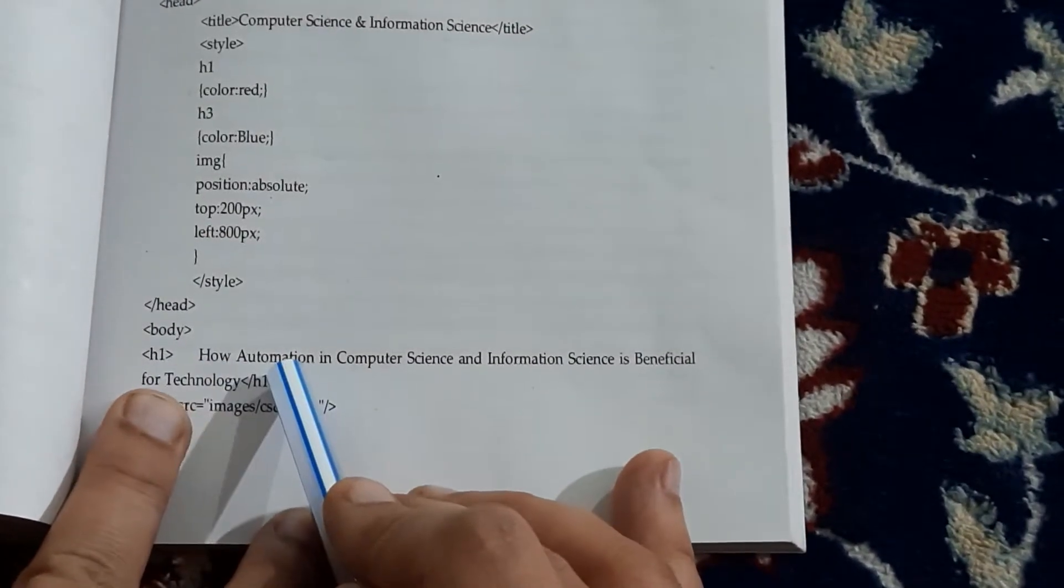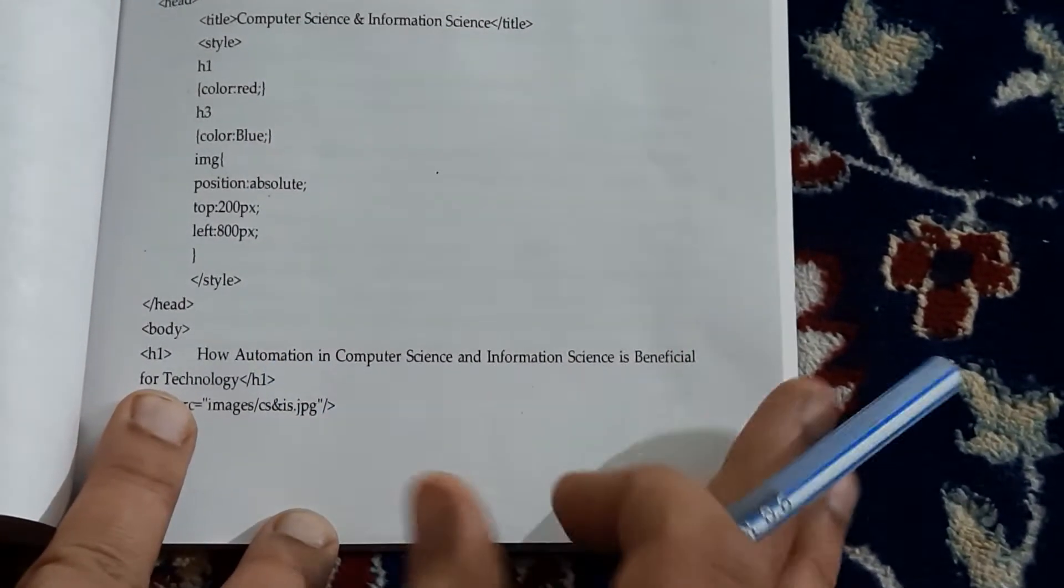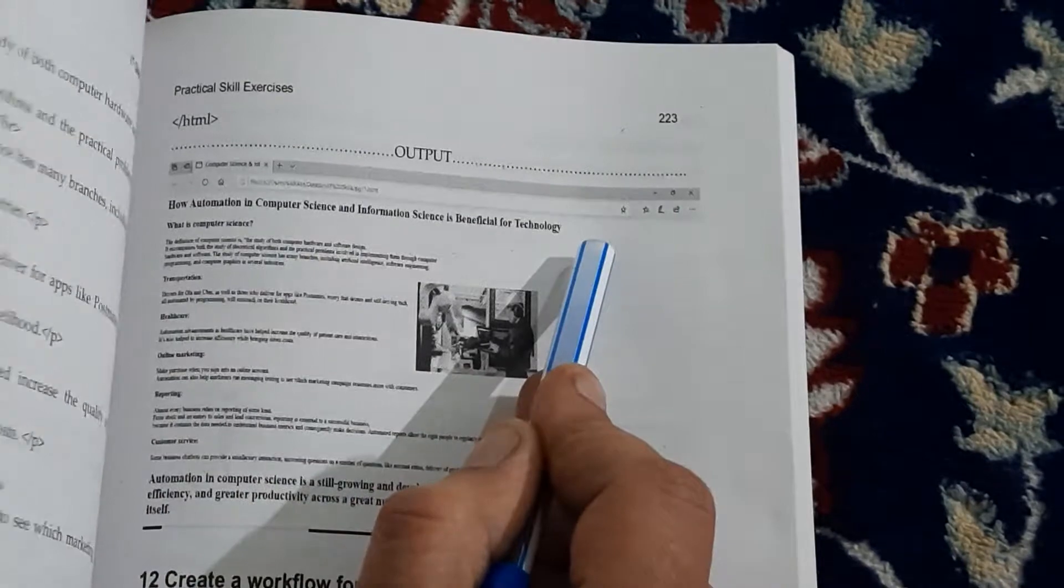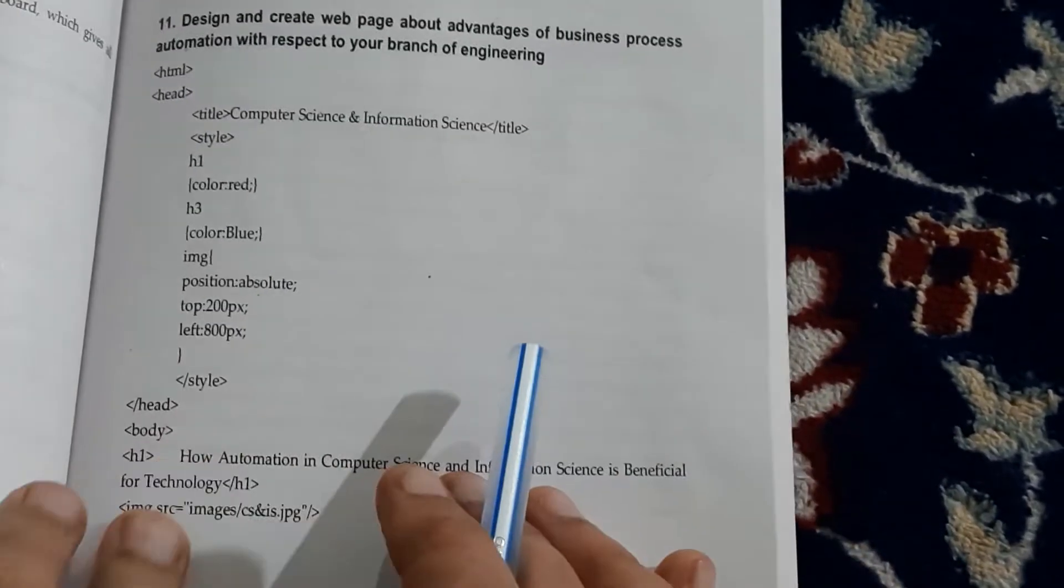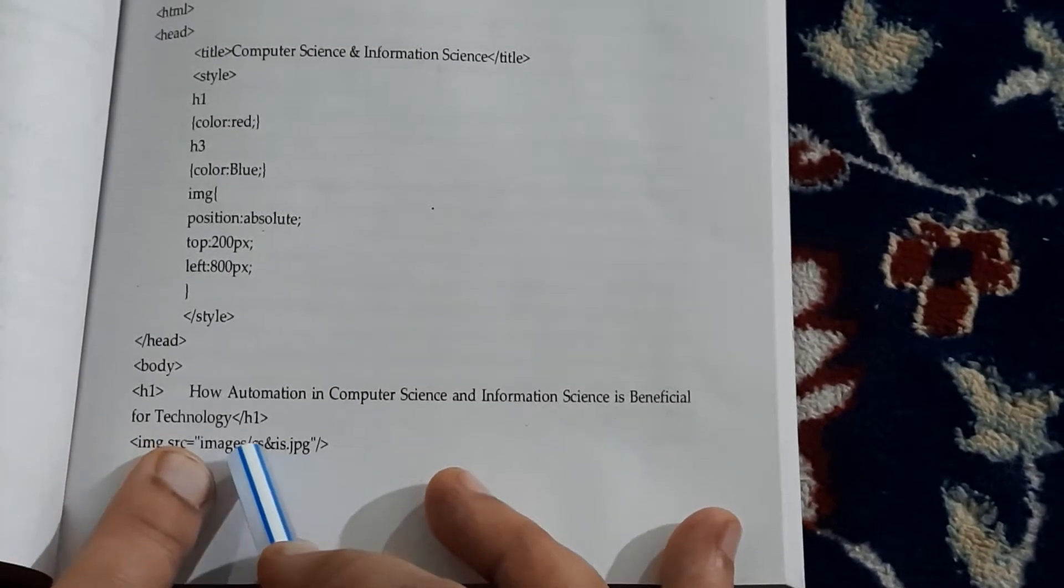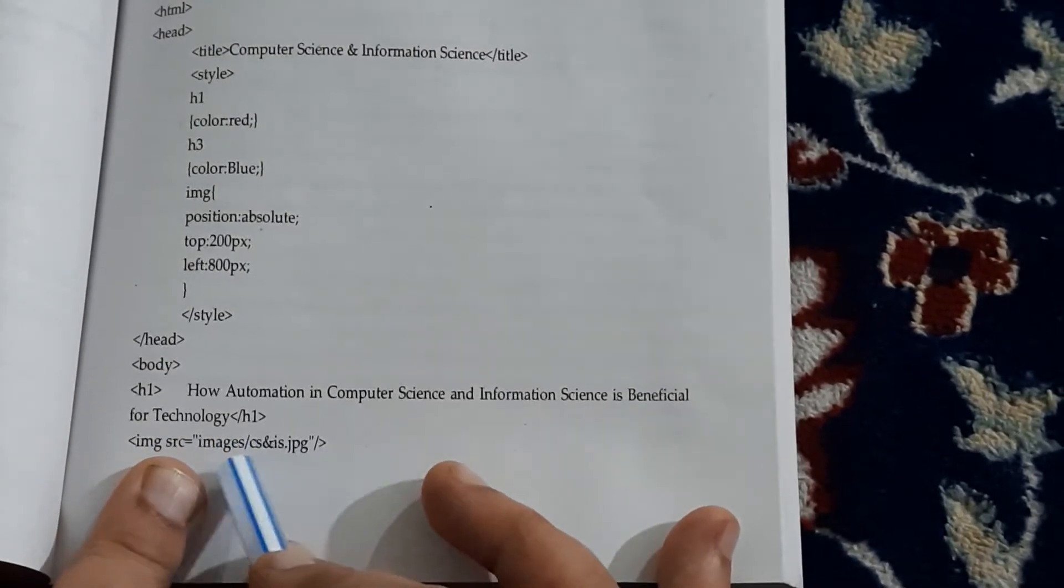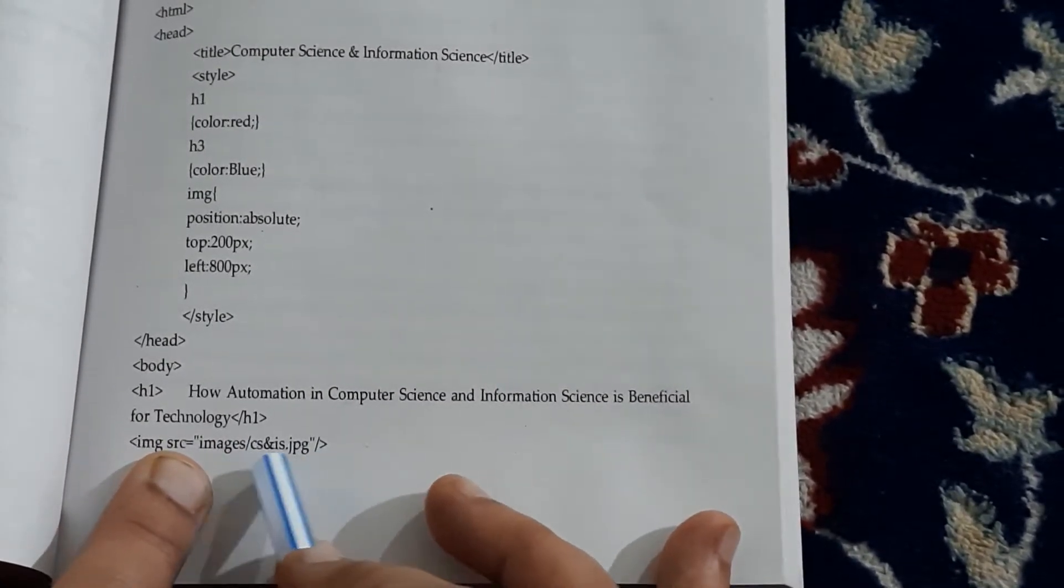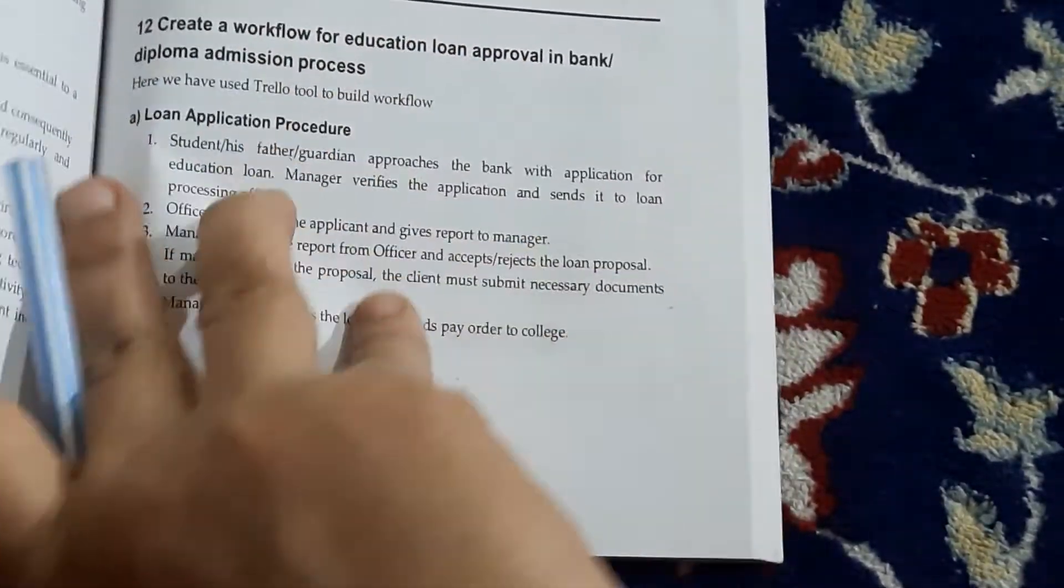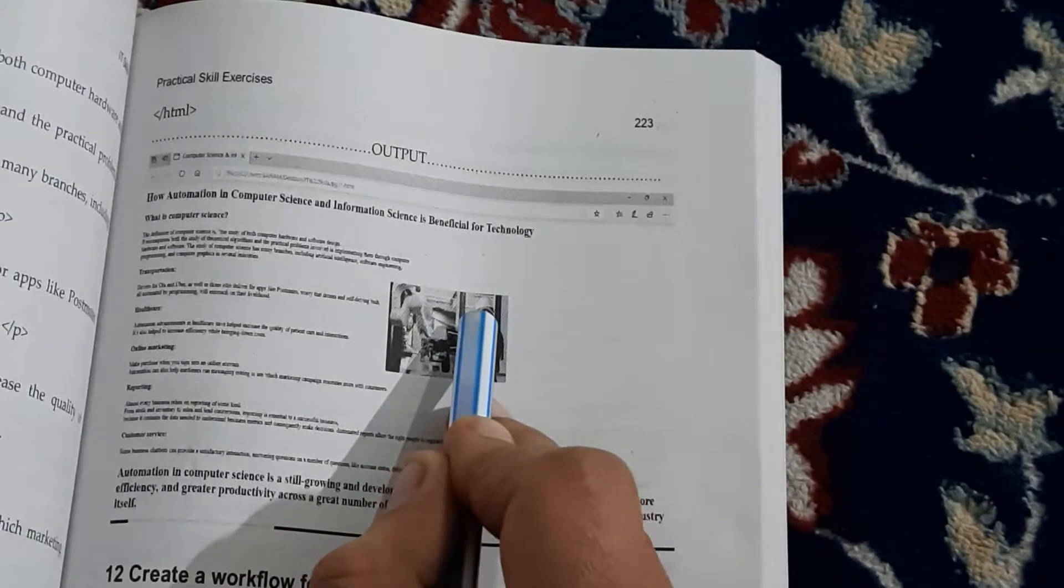Here we have got first heading: 'How automation in computer science and information science is beneficial for technology.' So this heading will be printed. Then you have got image src equals to - see, this is the directory or the place where you have stored your image, images/image. That's for the image, so this image will be printed.